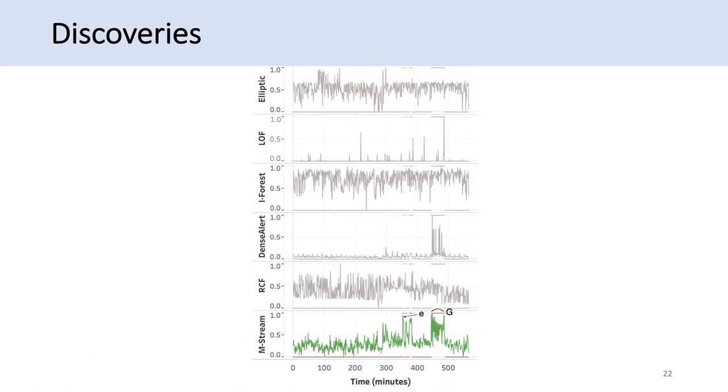This is a slightly interesting part where we discovered anomalies on a real-world dataset. We plotted normalized anomaly scores over time using all baselines and methods. We visualize the records by aggregating records at each minute by taking the maximum anomaly score for that minute, done for around 565 minutes. Ground truth values are indicated by zero or one—zero is normal, one is anomaly.